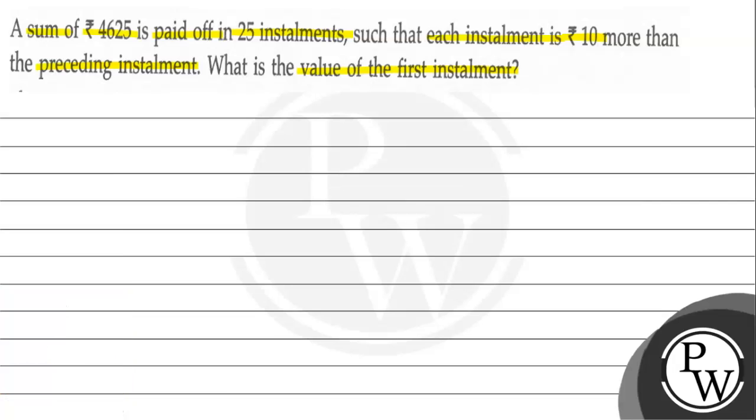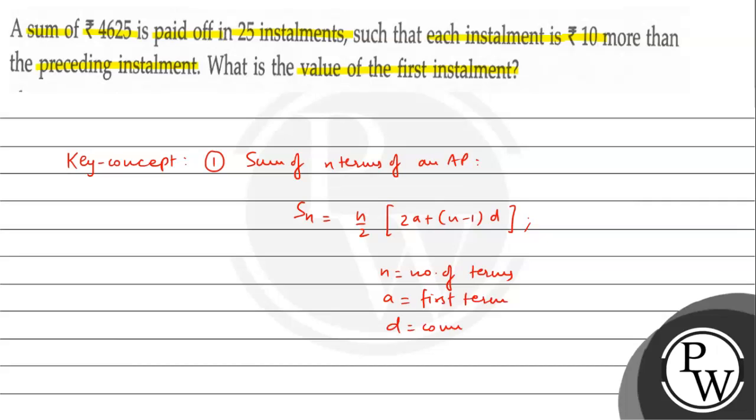It's a very simple question. First, let's write the key concept. The sum of n terms of an AP is given by the formula: Sn = (n/2) × [2a + (n-1)d], where n is number of terms, a is the first term, and d is the common difference.